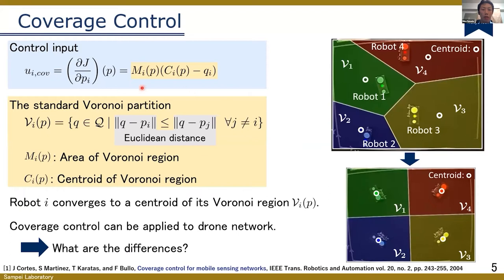This control input is described as follows. M and C are derived from the Voronoi partition. The Voronoi partition divides an environment into sub-regions close to each of the robots. For example, from the points in the green region, robot one is the closest robot. This is the formal expression of the Voronoi partition where the Euclidean distance is used as a distance metric. M_i is the area and C_i is the centroid of the Voronoi region. With this control input, each robot converges to the centroid of its Voronoi region, as you can see in this figure.